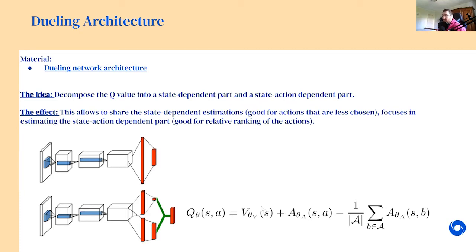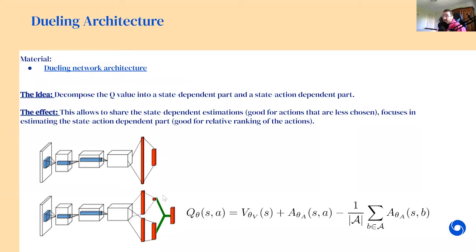At least for the actions you don't directly evaluate, the value will be estimated correctly — that's a nice property. Also, when you decompose Q into V and A, you focus more on producing a good ranking between actions, because you learn the advantage function specifically. The advantage tells you how good one action is compared to others. You subtract the mean advantage so you really focus on the ranking signal. Summing V and A brings you back to the Q-value. It's a very simple trick, and with nearly the same number of weights you get much better estimation of action rankings.